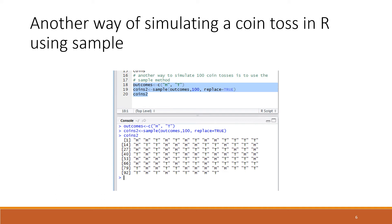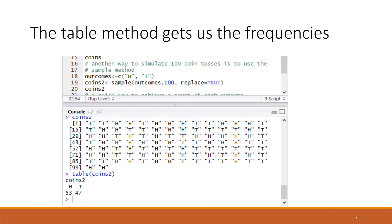The next function we're using is the table function. We ask table to have an argument of coins_two. Coins_two was this large vector of T's and H's, and what it does is the counting for you. The result of table(coins_two) was 53 heads and 47 tails.